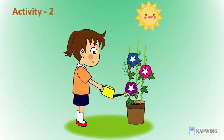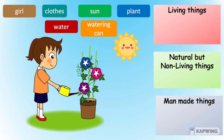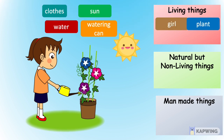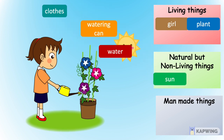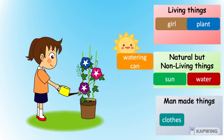Look at this picture. What all can we find in this picture? A girl, clothes, watering can, a sun, plant, and water. Let us sort the things in the picture under the right group. What comes under the living things group? Girl and a plant. Under the natural but non-living things group, we have sun and water. And lastly, under the man-made things group, belongs clothes and a watering can.